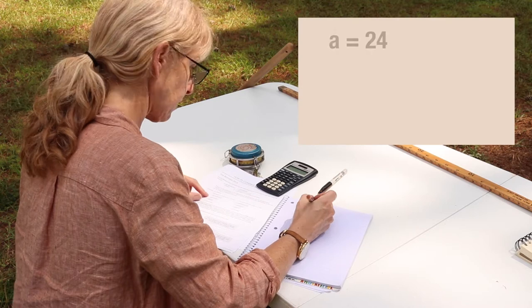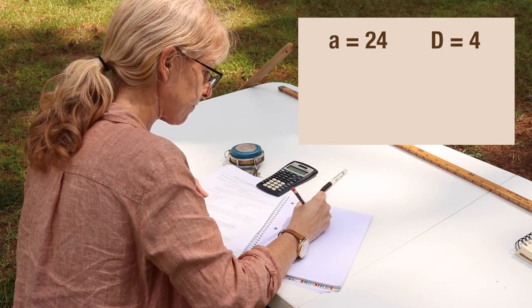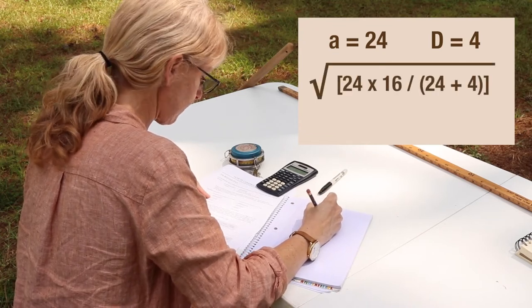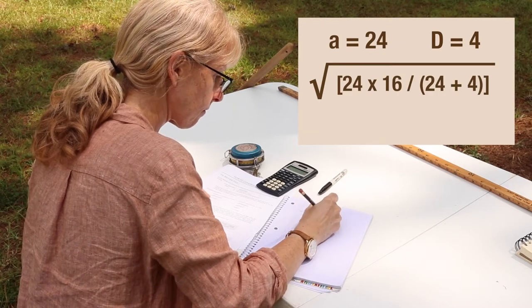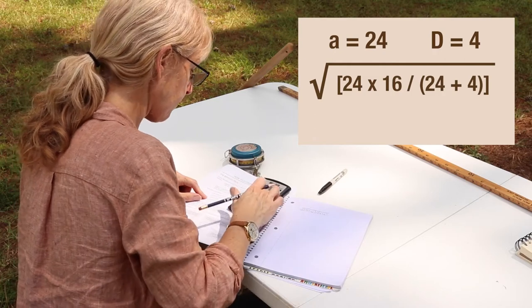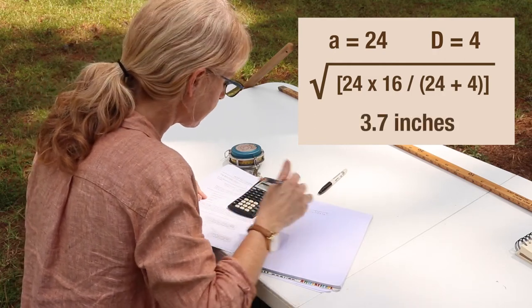if you have an arm reach of 24 inches and you're trying to determine the graduation for a 4 inch tree, the formula would be the square root of 24 times 16 divided by 24 plus 4. When you work that out, it comes to 3.7 inches.